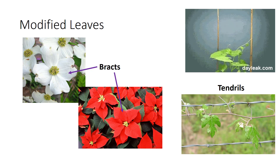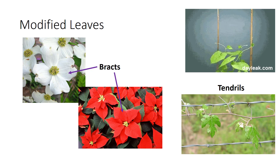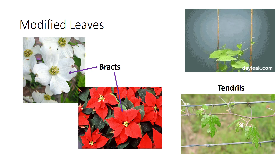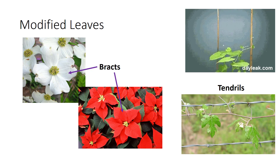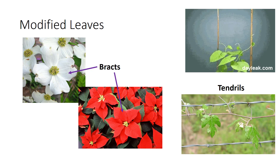Modified leaves are commonly mistaken for other structures such as flowers or stems. These are some examples of modified leaves. Bracts are leaves located just below the flower — for example, the poinsettia and dogwood. Tendrils are appendages produced by certain vines that wrap around a support and allow them to climb — for example, the grape.